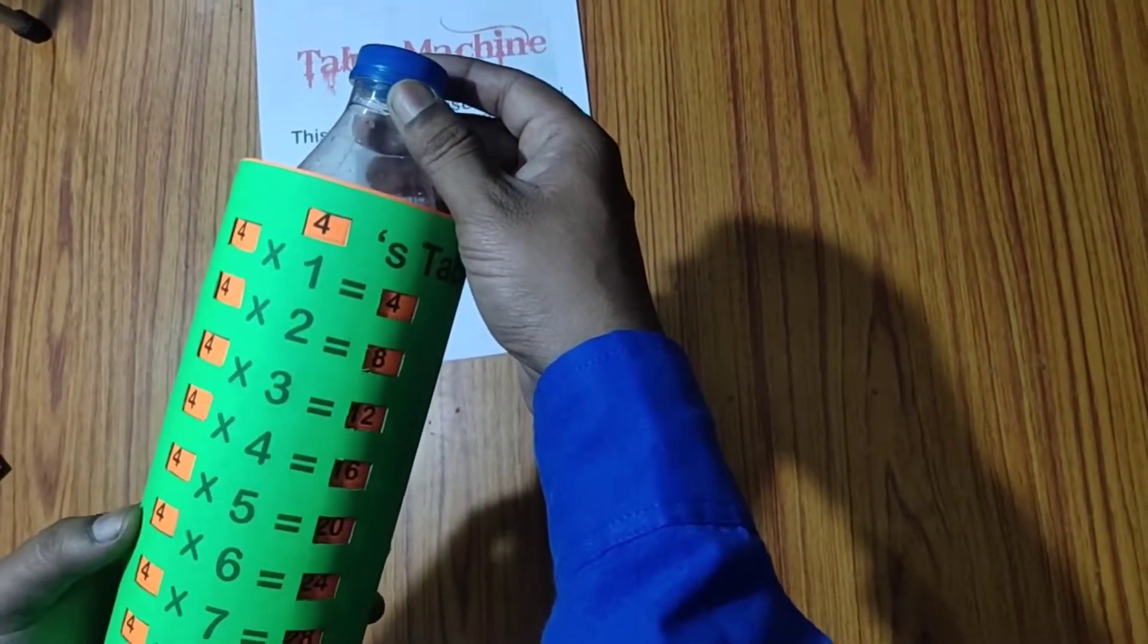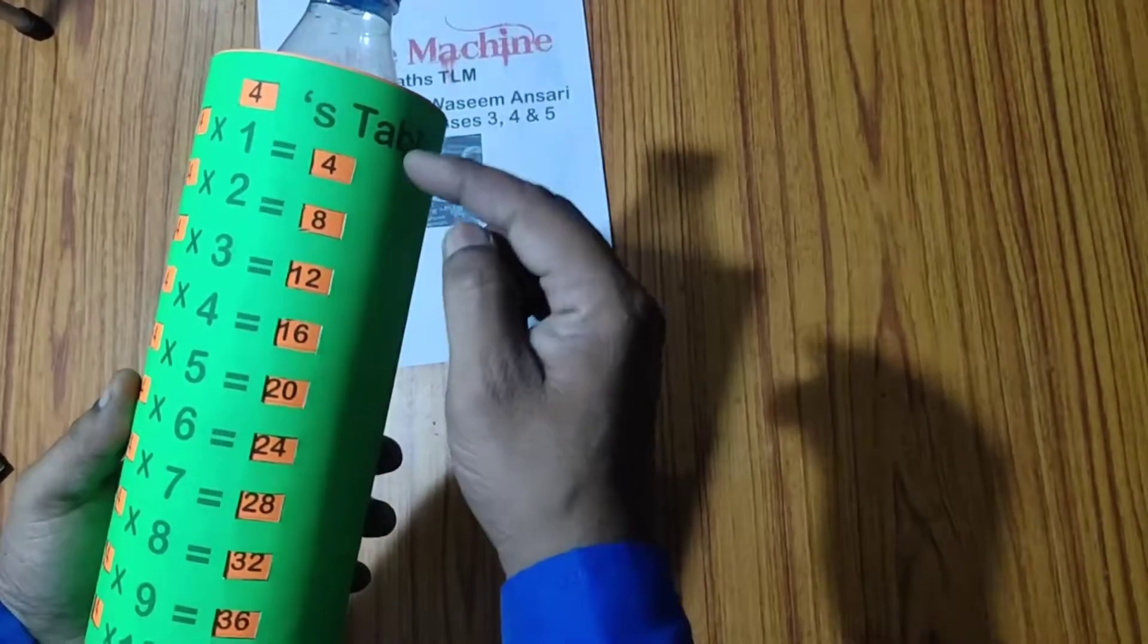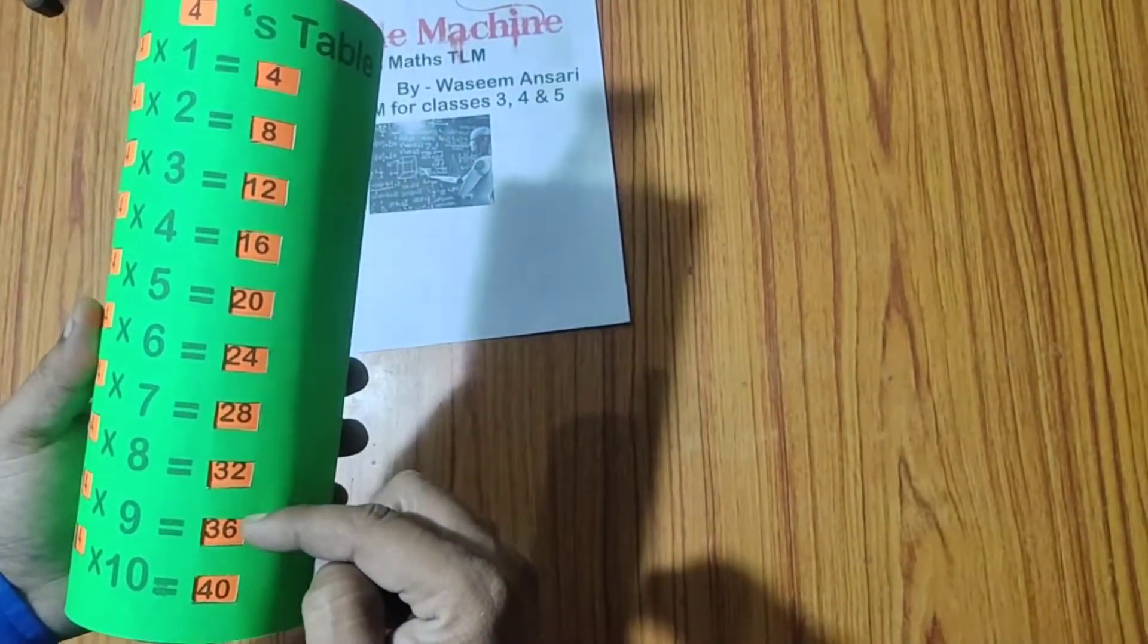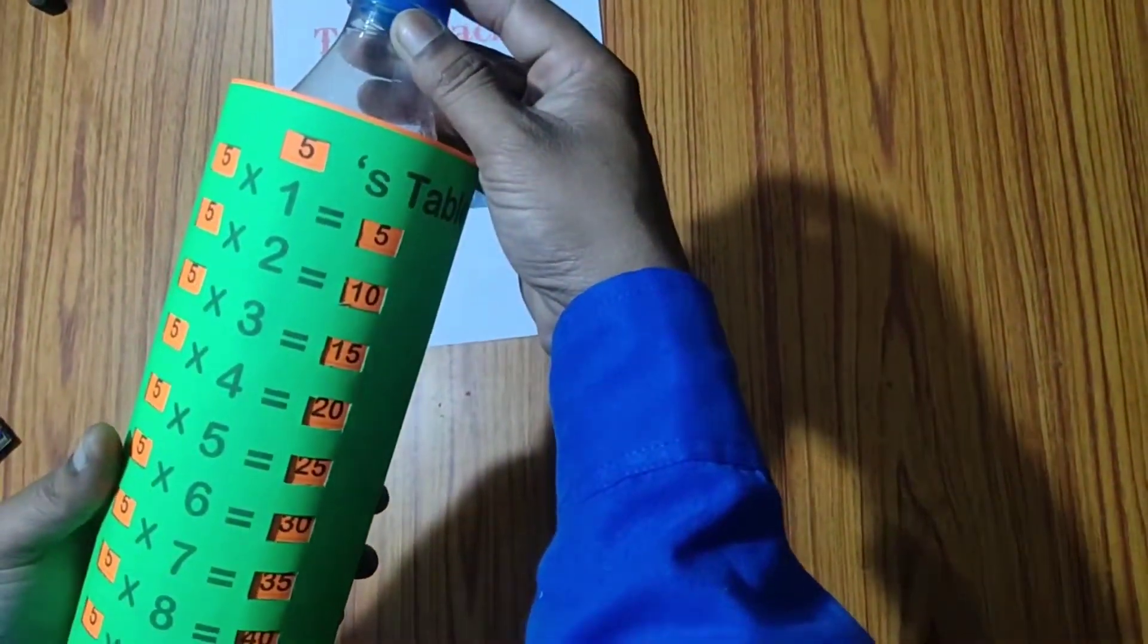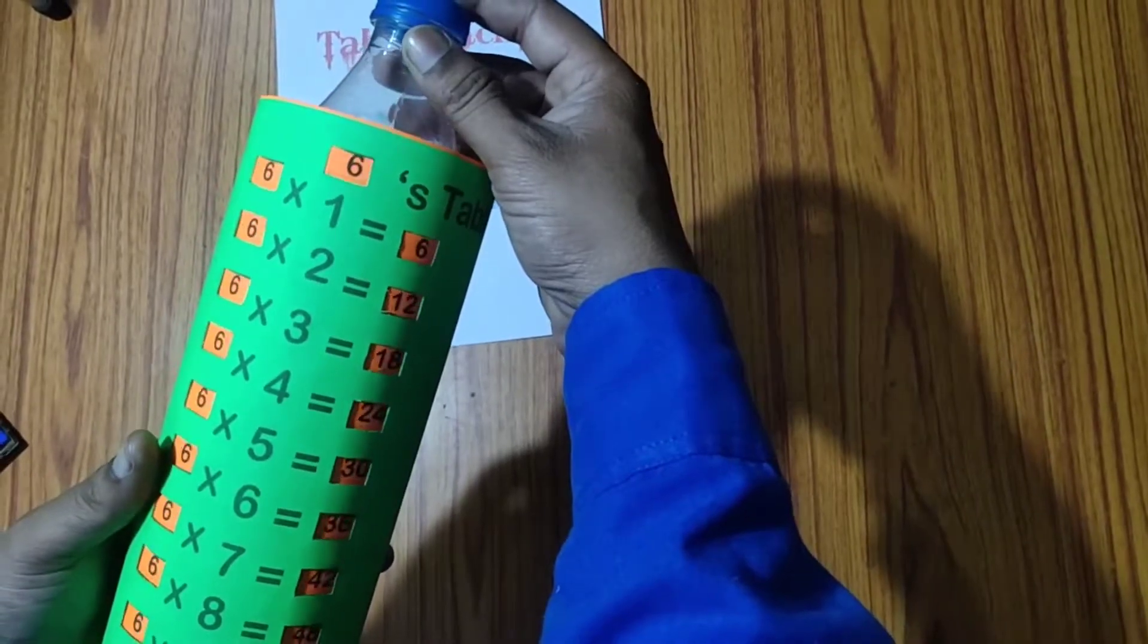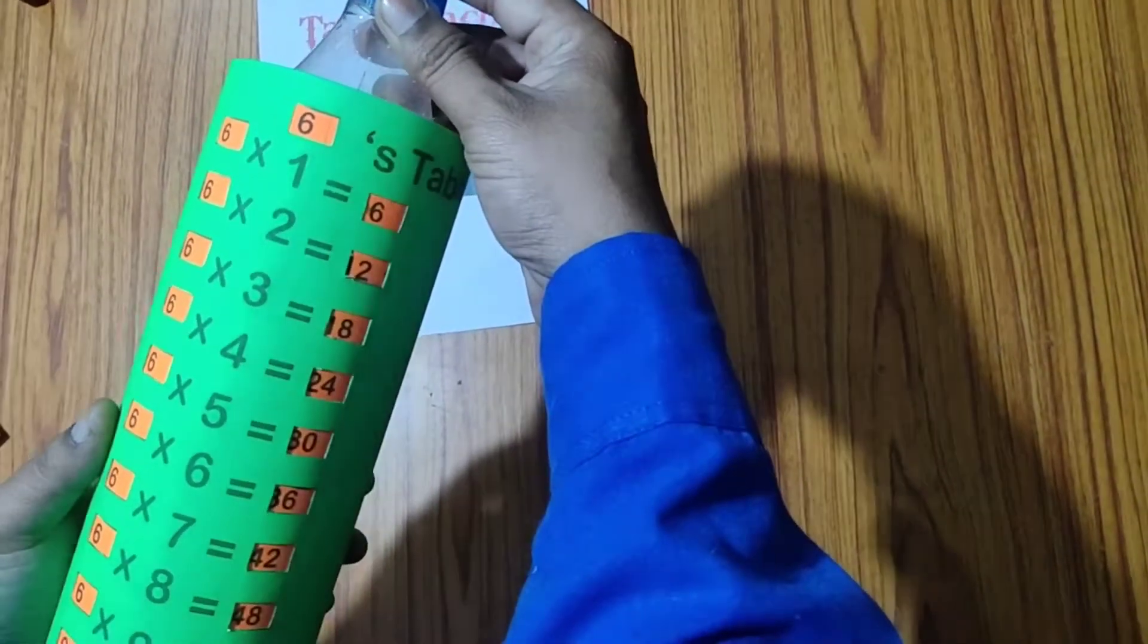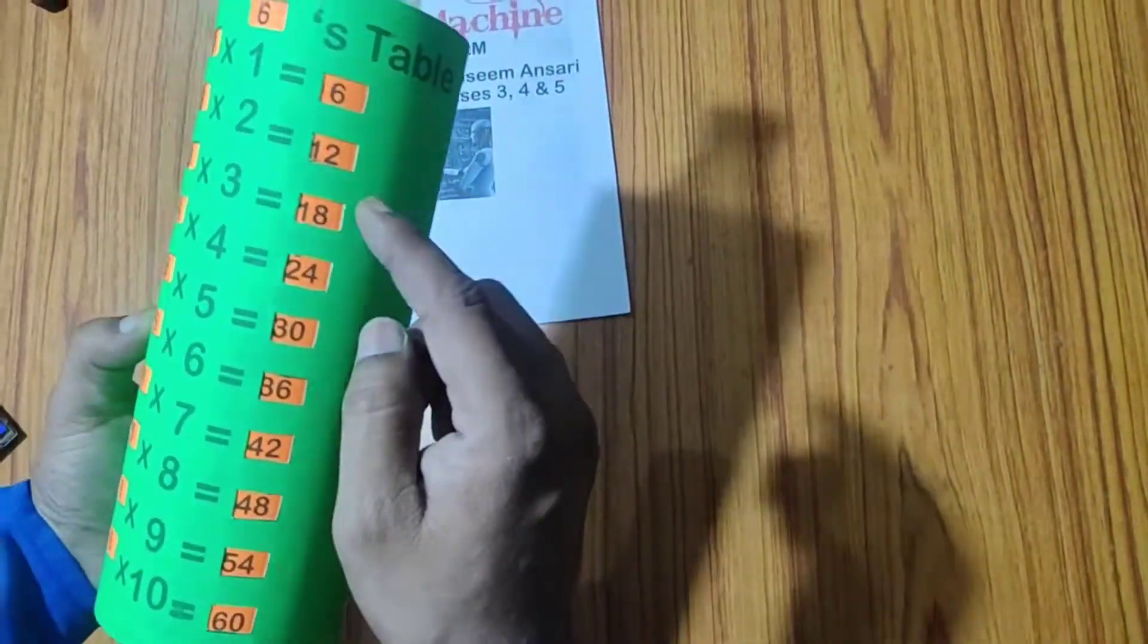And it will rotate a little bit more. You will get table of 4. All the numerals written to 4. Then it will rotate more. Table of 5. Similarly table of 6. You can see table of 6.